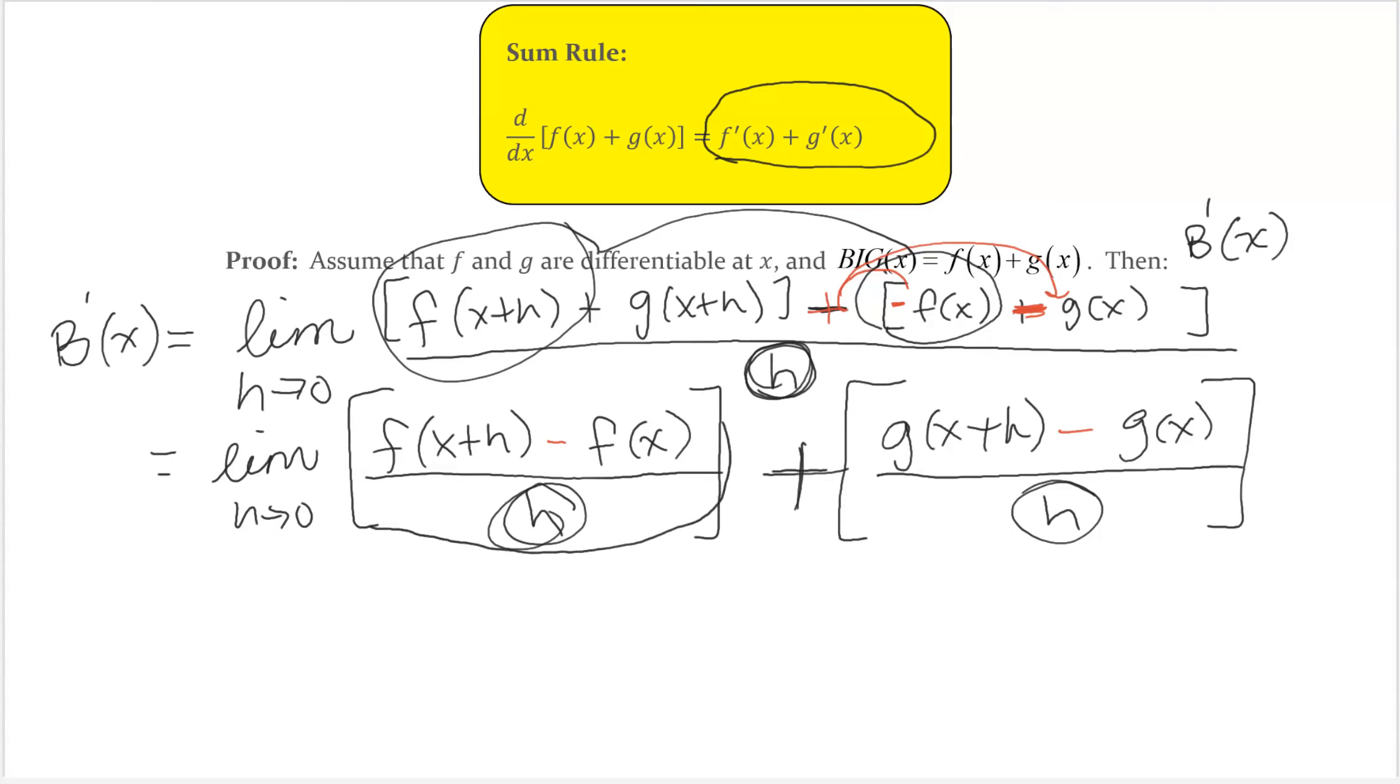The limit of h go to 0 of the first part, as we know, is the derivative of f(x). And when h go to 0 of the second part, that's the derivative of g(x). So there we go. I have just shown you the derivative of a sum is the sum of the derivatives.